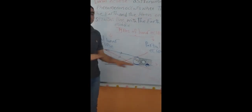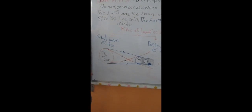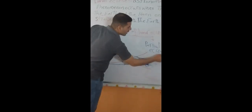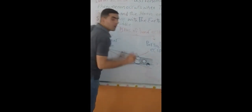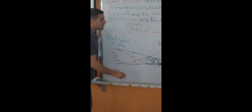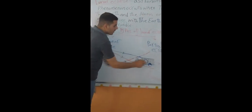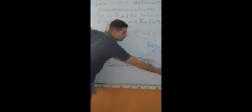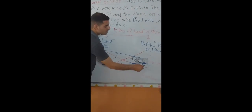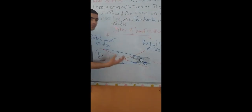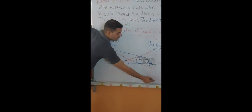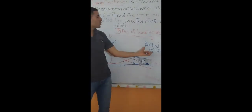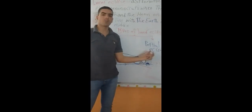The moon is completely disappeared during total lunar eclipse. While in partial lunar eclipse, only a part of the moon is blocked by the Earth and located in the umbra. Only a part of the moon can be seen or observed — the part which is located outside the umbra — and so it is said to be partial lunar eclipse.